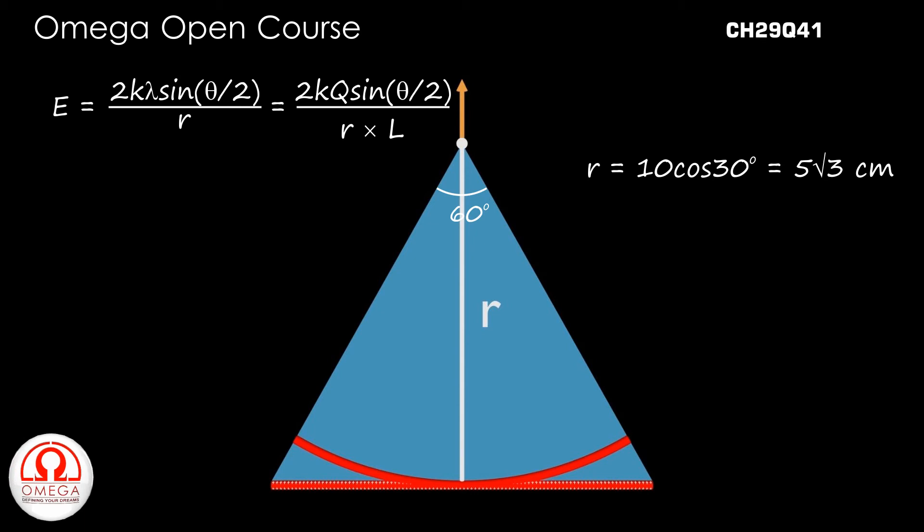Putting the values, we get electric field is equal to 2 into 9 into 10 to the power 9 into 50 into 10 to the power minus 6 sin 30 degree divided by 5 root 3 into 10 to the power minus 2 into 0.1.